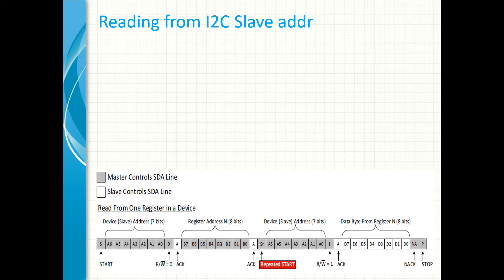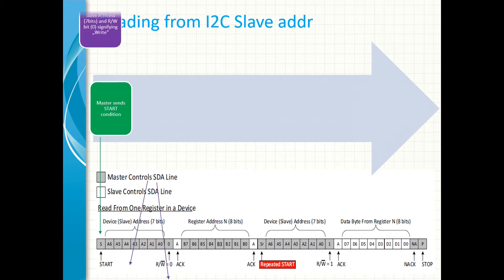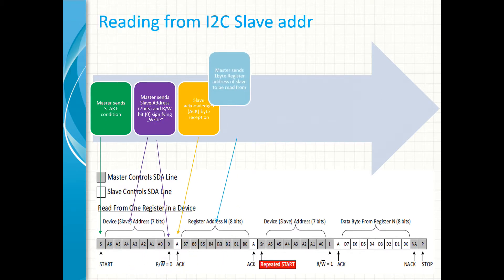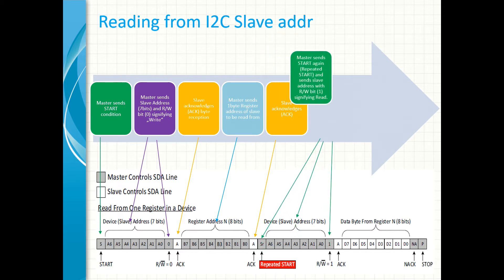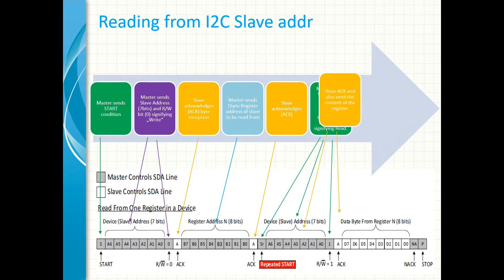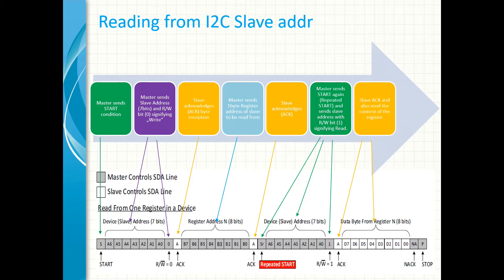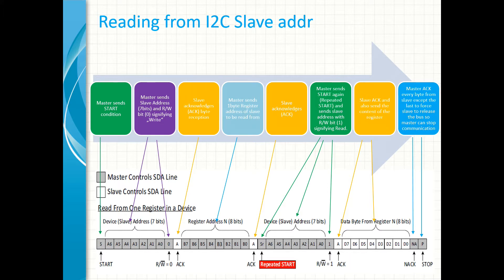Reading a slave address is similar to writing for the first two byte transfers. After the slave acknowledges the slave address sent, the master sends a second start signal — a repeated start — with the slave address again, but this time sets the read-write bit to 1 to indicate read. Then the slave acknowledges and sends the content of the register, which will be acknowledged by the master, except the last byte, which the master does not acknowledge in order to force the slave to release the SDA line so that the master can send a stop bit.